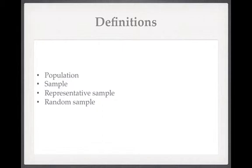A random sample is when you devise some way to pick people entirely at random from your population. Random sampling, if it's truly random, has the benefit that it is representative.